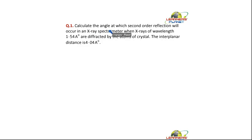Calculate the angle at which second order reflection will occur in an X-ray spectrometer when X-rays of wavelength 1.54 angstrom are diffracted by the atoms of crystal. The interplanar distance is 4.04 angstrom. Now students, this is a question of Bragg equation.